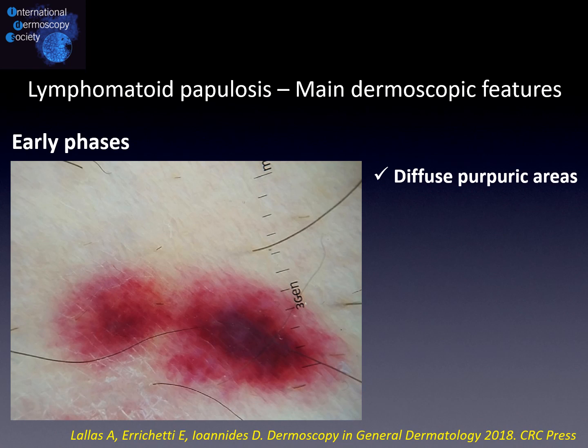Additionally, although more uncommonly, diffuse purpuric areas may be the only dermoscopic finding seen in early phases.